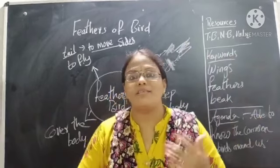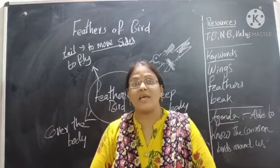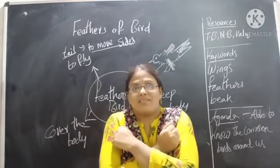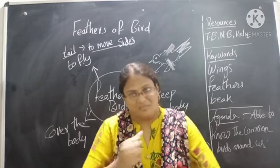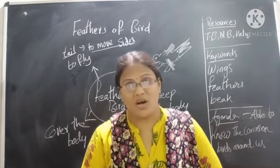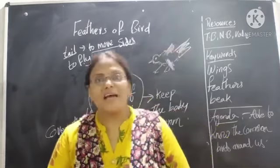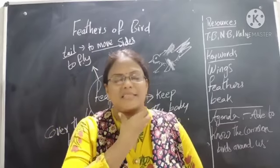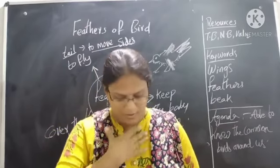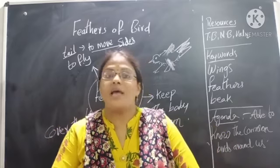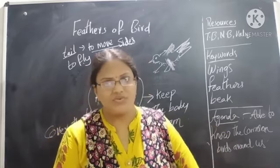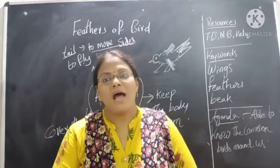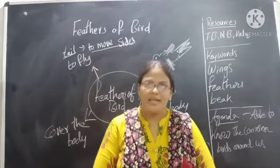Now tell me, how does a bird keep itself warm? Feathers cover the entire part of the bird — the head part, down part, body part, wings, tail, everywhere. But their sizes are different. Everywhere, feathers are covered on the body of the bird, and they help the body to keep warm.